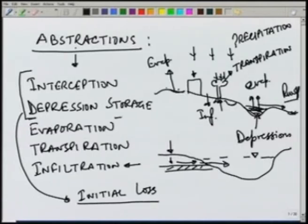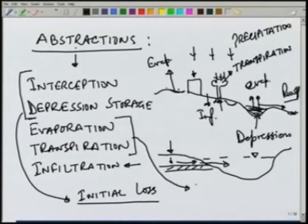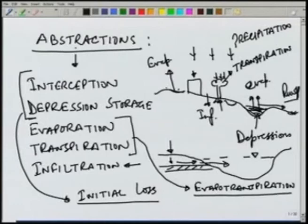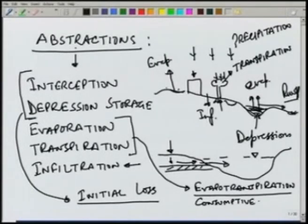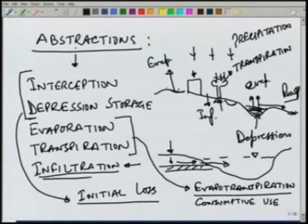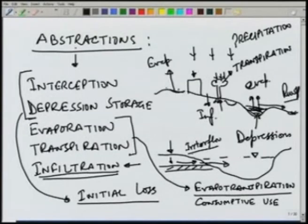Evaporation and transpiration are very similar in nature, and the factors affecting them are almost identical. So we combine them and call it evapotranspiration, or sometimes consumptive use. Evapotranspiration includes both evaporation and transpiration from plants. Infiltration will also be considered as a loss — the interflow or subsurface runoff we will for the time being not consider.